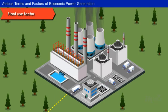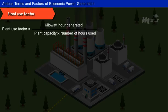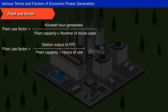Plant Use Factor: It is the ratio of kilowatt-hours generated to the product of plant capacity and the number of hours for which the plant was operated. That is, plant use factor is equal to station output in kilowatt-hours divided by plant capacity multiplied by hours of use.